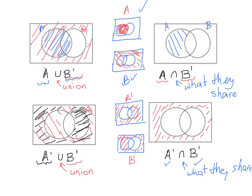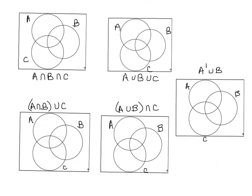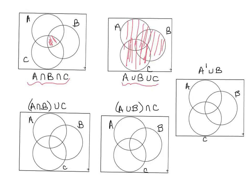Now we're going to throw a third circle in there. We have three-circle Venn diagrams, so let's jump in. A intersect B intersect C is what all three sets have in common, and that is the middle region — the center that A, B, and C all share.